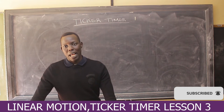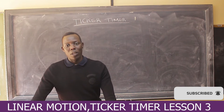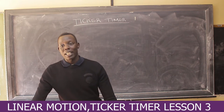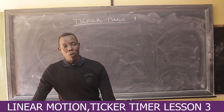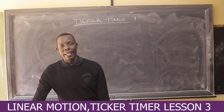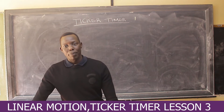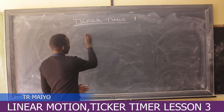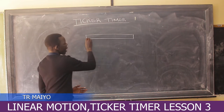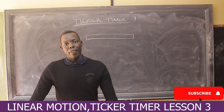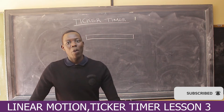A ticker timer is a machine that uses alternating current. We have two types of current: direct current and alternating current. Alternating current is a current that flows with reversal at a given frequency. For a ticker timer to be used, there must be a tape. The ticker timer makes dots on the tape, and those dots are what we use to find the acceleration.